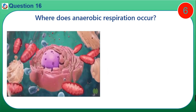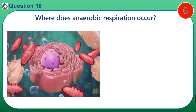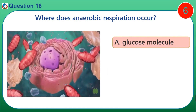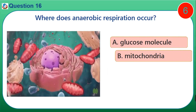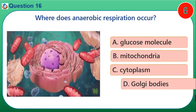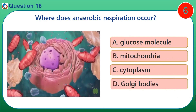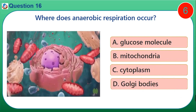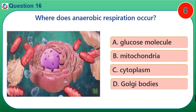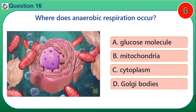Question 16. Where does anaerobic respiration occur? A. Glucose molecule. B. Mitochondria. C. Cytoplasm. D. Golgi bodies.